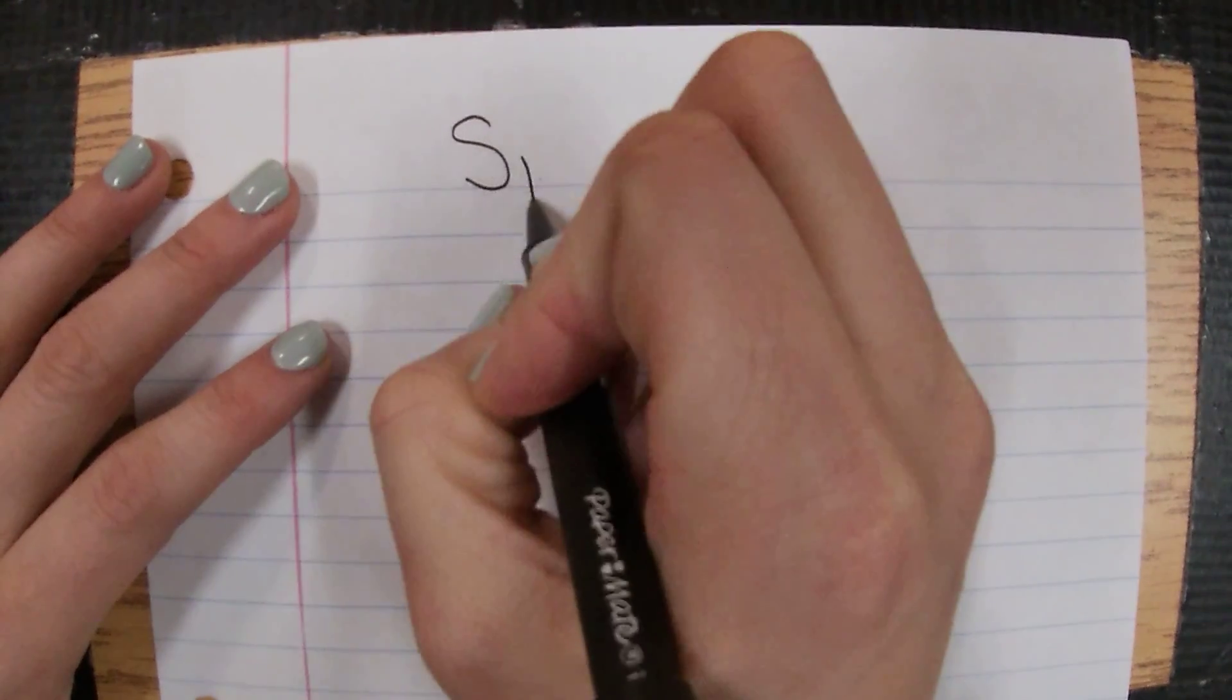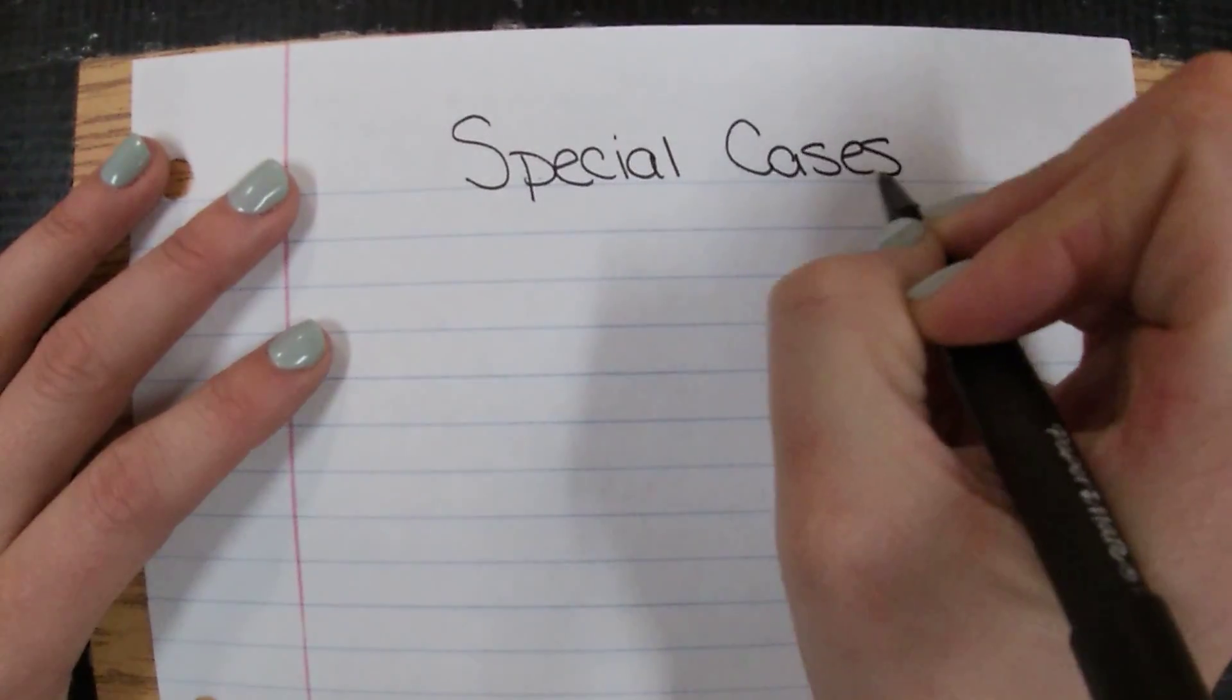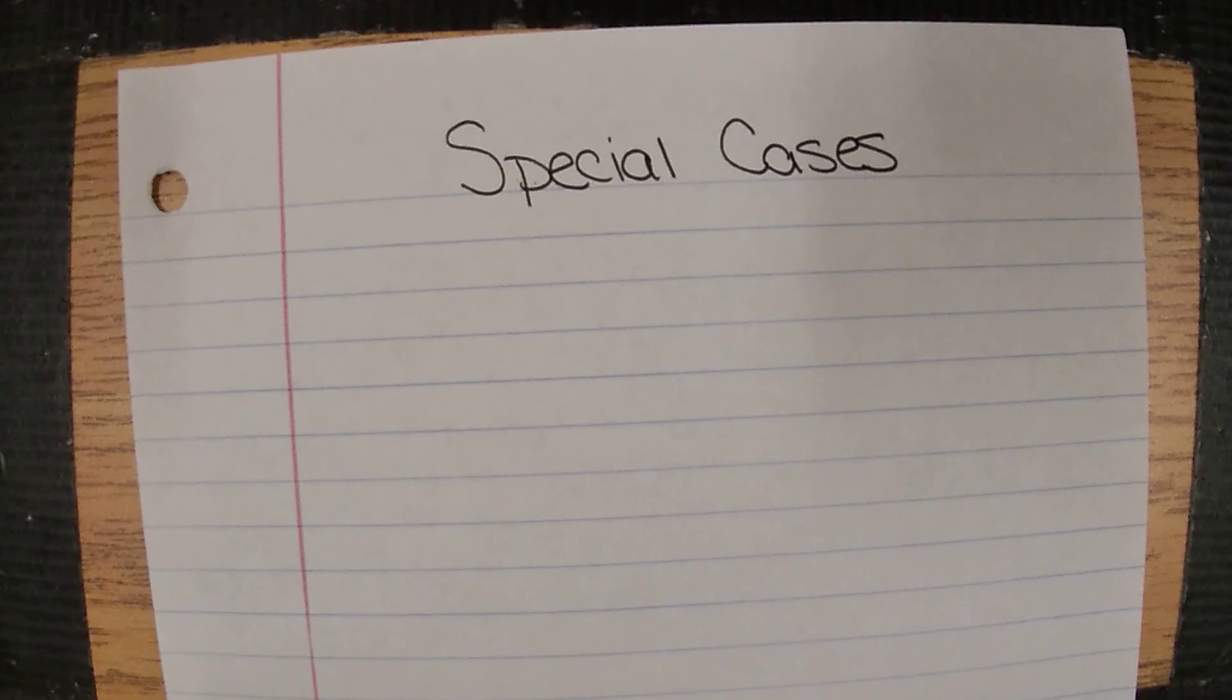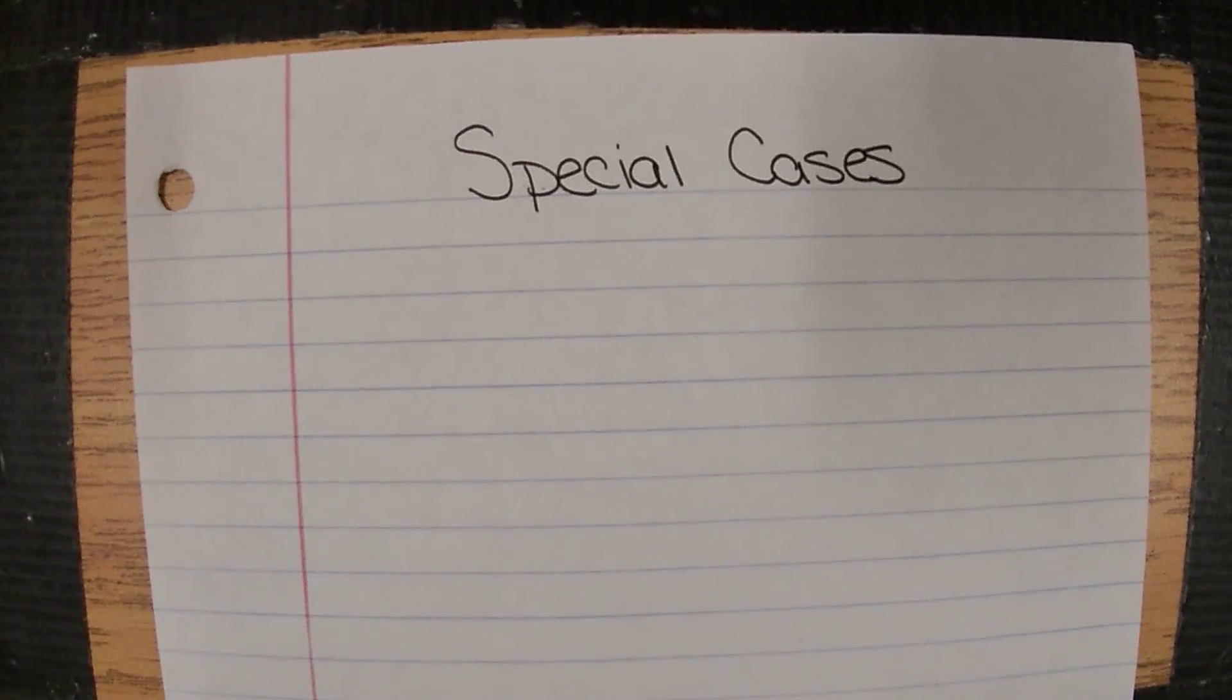We are still continuing with factoring. Today we're going to look at factoring special cases. If you've noticed, each topic has gotten a little bit more specific on what we can factor. GCF works for any number of terms and any type of terms, then grouping which only works for four terms. Trinomials are only three terms but they have to be in the category ax squared plus bx plus c.